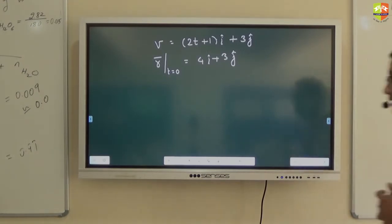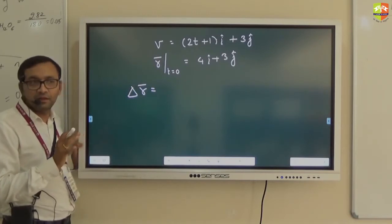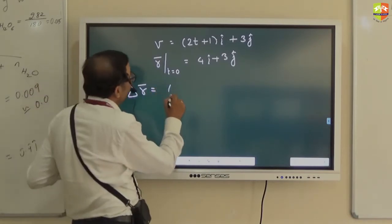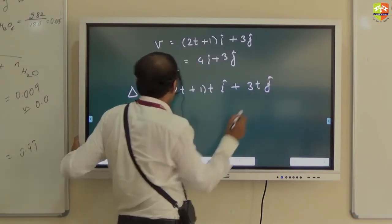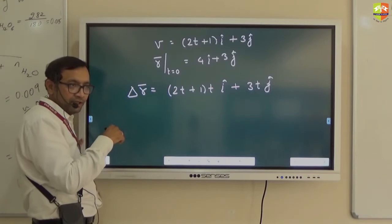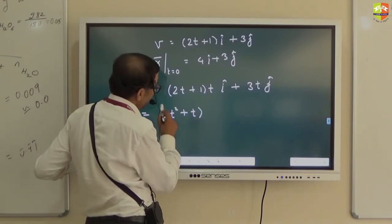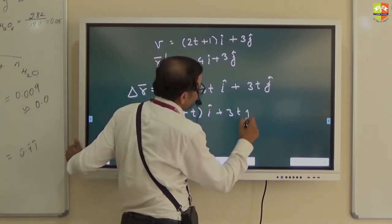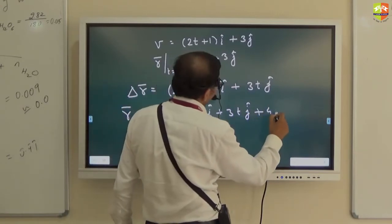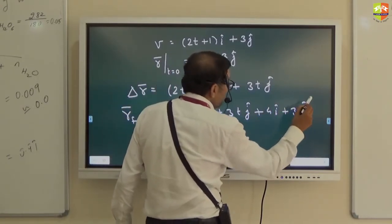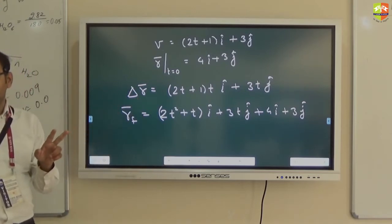Should I solve? Displacement is how much? Delta r will be equal to velocity to time. V into t will be the displacement. So this will be what? 2t plus 1 into t i cap plus 3t j cap. And delta r is what? Final position vector minus initial position vector. Right? Displacement is changing position vector. Okay?